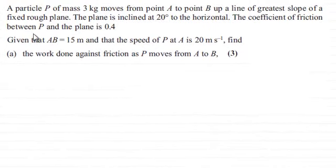Hi there. Now for this question, we're told that a particle P of mass 3 kilograms moves from point A to point B up a line of greatest slope of a fixed rough plane. The plane is inclined at 20 degrees to the horizontal. The coefficient of friction between P and the plane is 0.4. Given that AB is 15 metres and the speed of P at A is 20 metres per second, we've got to find the work done against friction as P moves from A to B for three marks.